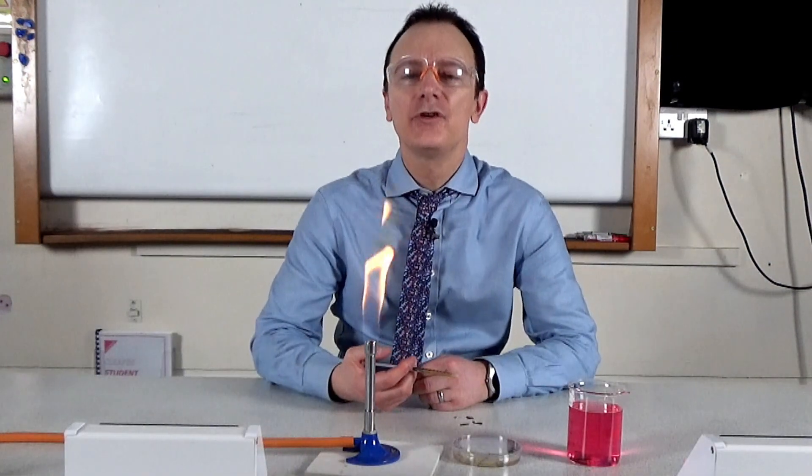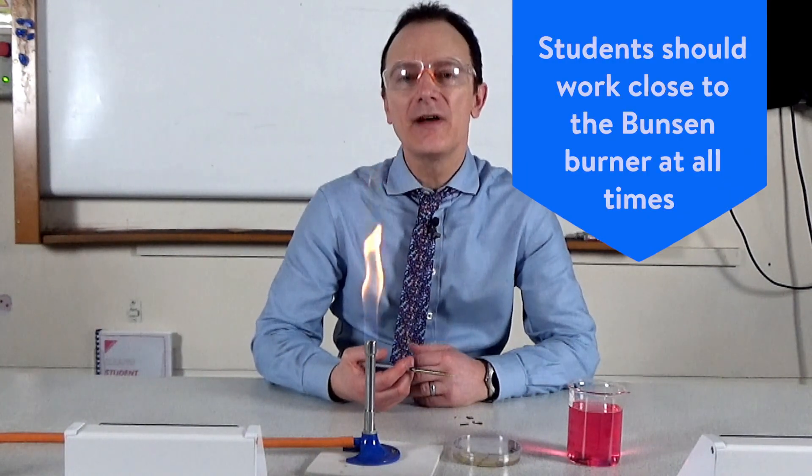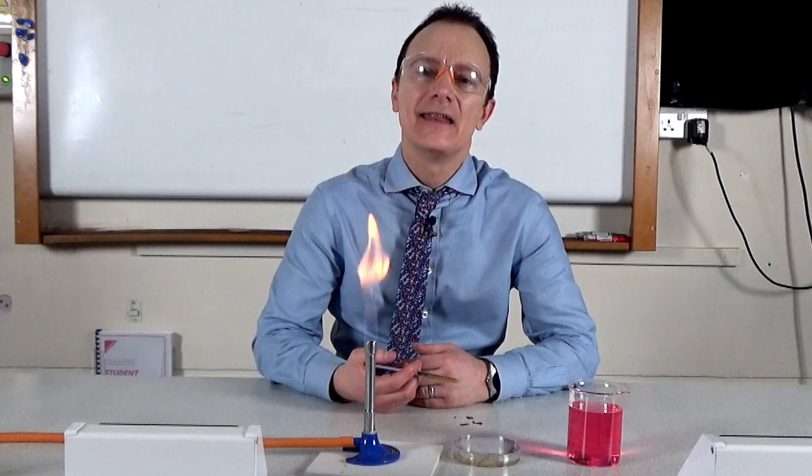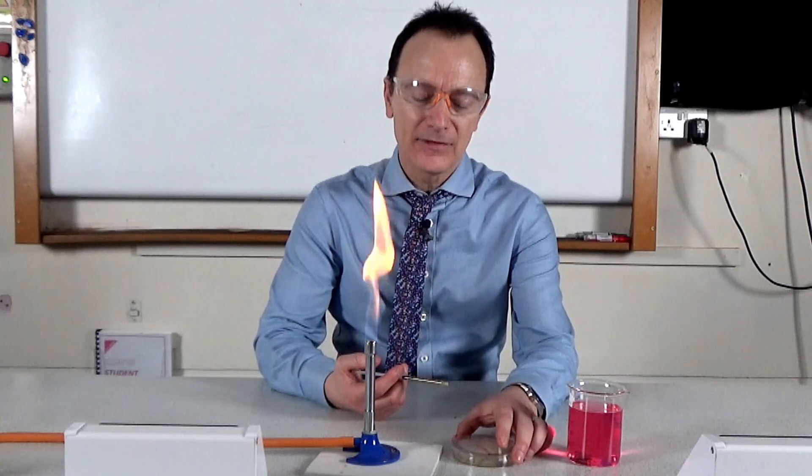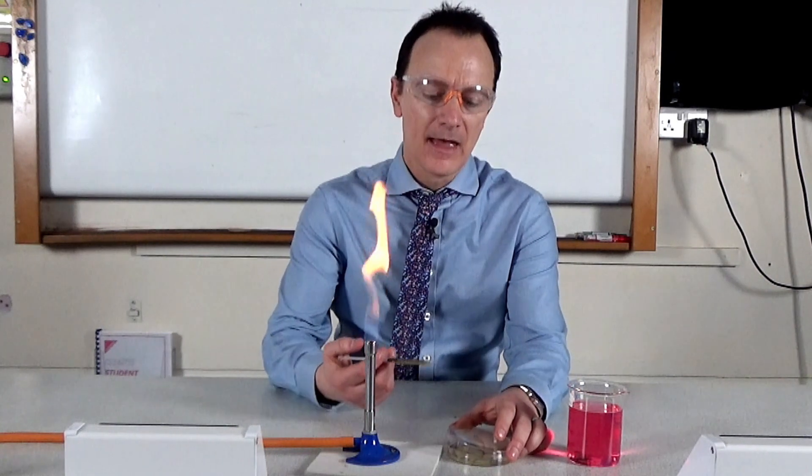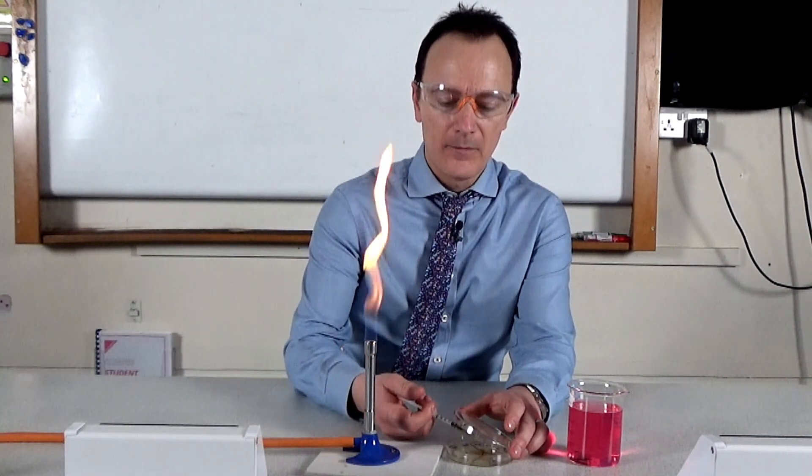It's important that your students work close to the Bunsen burner at all times, so that the convection currents can carry away any bacteria that they may be breathing out. They then lift the lid of the petri dish slightly and using the syringe, they discharge it into the petri dish.